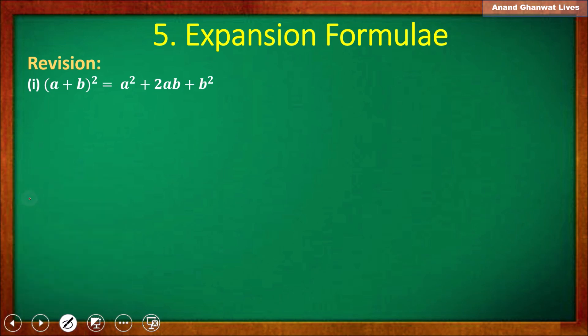In simple language we can say that the square of two terms is equal to the square of the first term, plus twice the product of those two terms, plus the square of the second term.